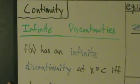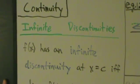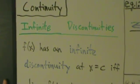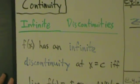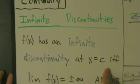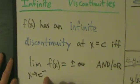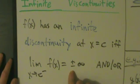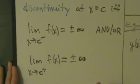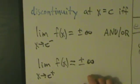In this video we're going to talk about infinite discontinuities — our last type of discontinuity. f of x has an infinite discontinuity at x equals c if and only if the limit as x approaches c from the left of f of x is plus or minus infinity, and/or the limit as x approaches c from the right of f of x is positive or negative infinity.